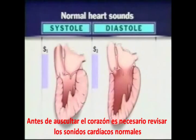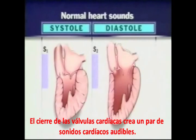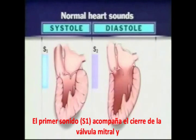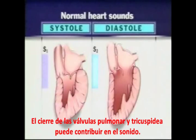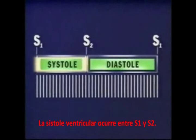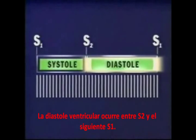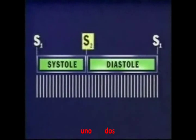Before auscultating the heart, let's review normal heart sounds. Closure of the heart valves creates a pair of audible heart sounds. The first sound, S1, accompanies mitral valve closure. The second sound, S2, accompanies aortic valve closure. Pulmonic and tricuspid valve closure may contribute to these sounds. Ventricular systole occurs between S1 and S2; ventricular diastole occurs between S2 and the next S1. Because diastole usually lasts longer than systole, you can identify the two sounds: one, two, one, two.